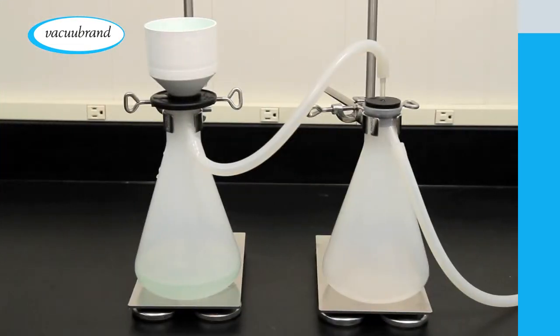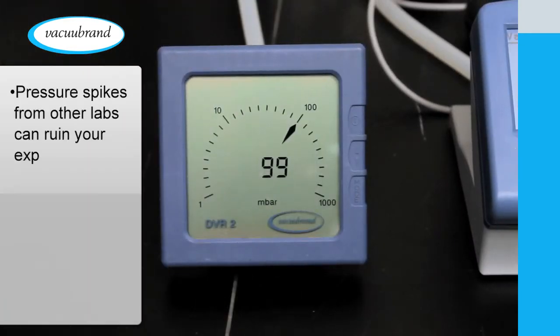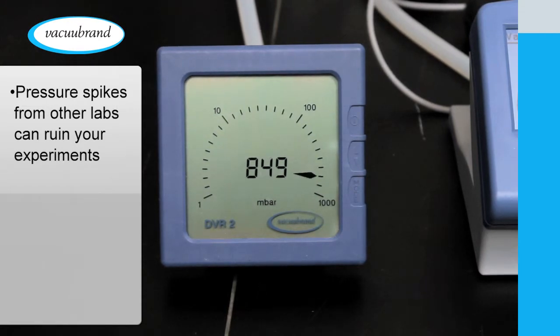Oh sure, if you need basic vacuum for simple filtration or aspiration, it provides adequate suction, but what about other applications like evaporations in the chemistry labs? If you're trying to maintain constant conditions and someone in another lab opens a port to aspirate liquids, the pressure spike can ruin your run.